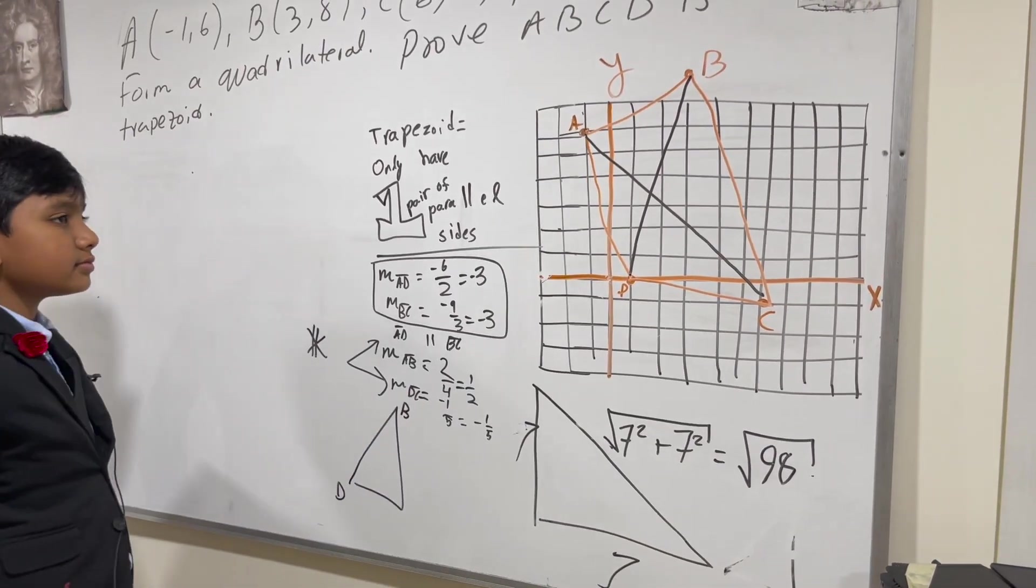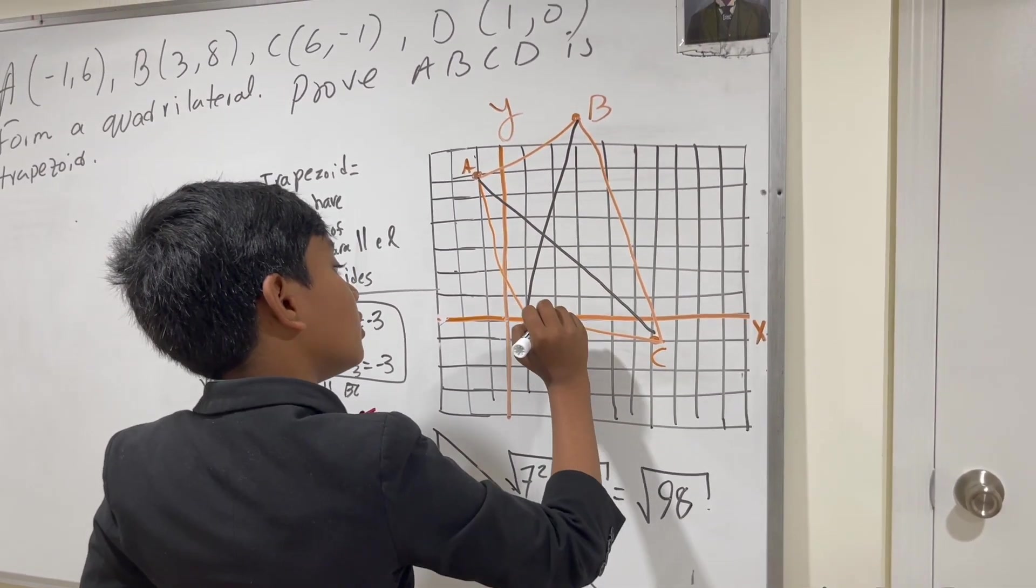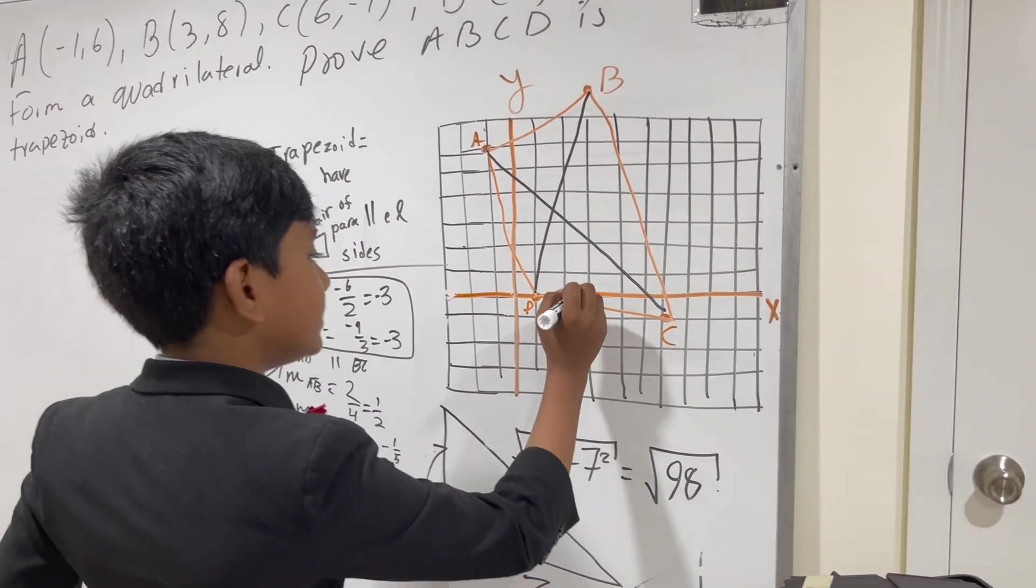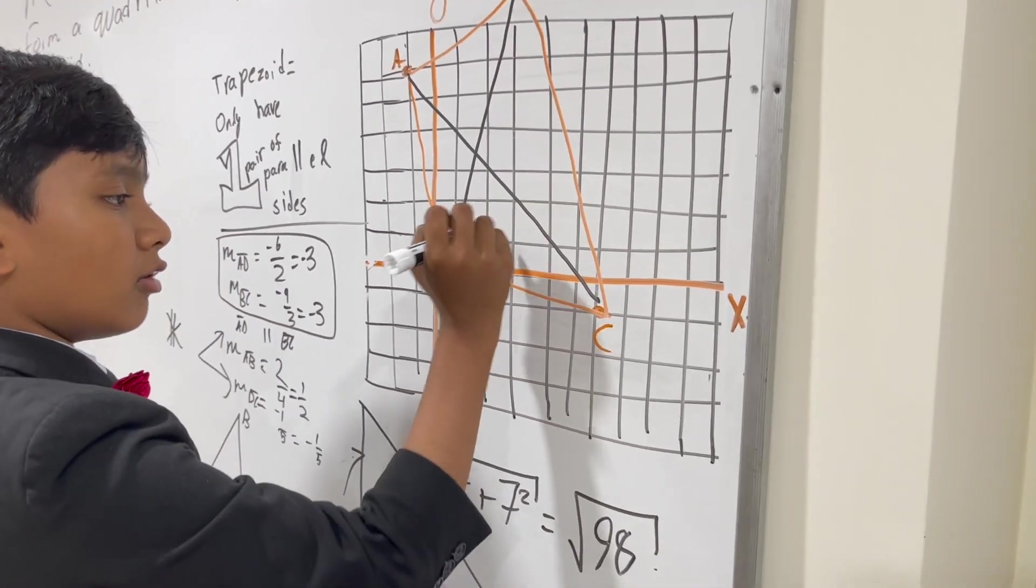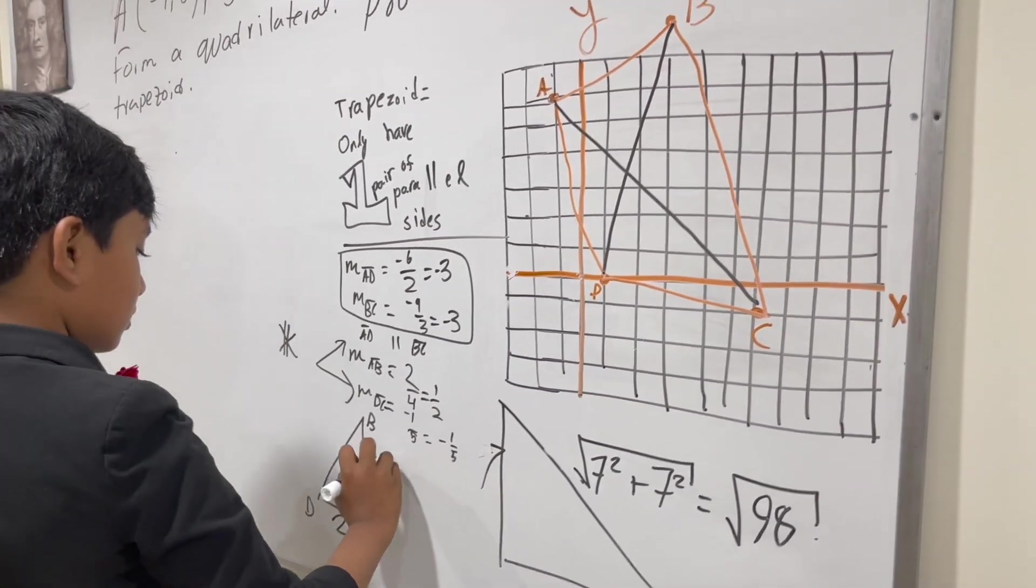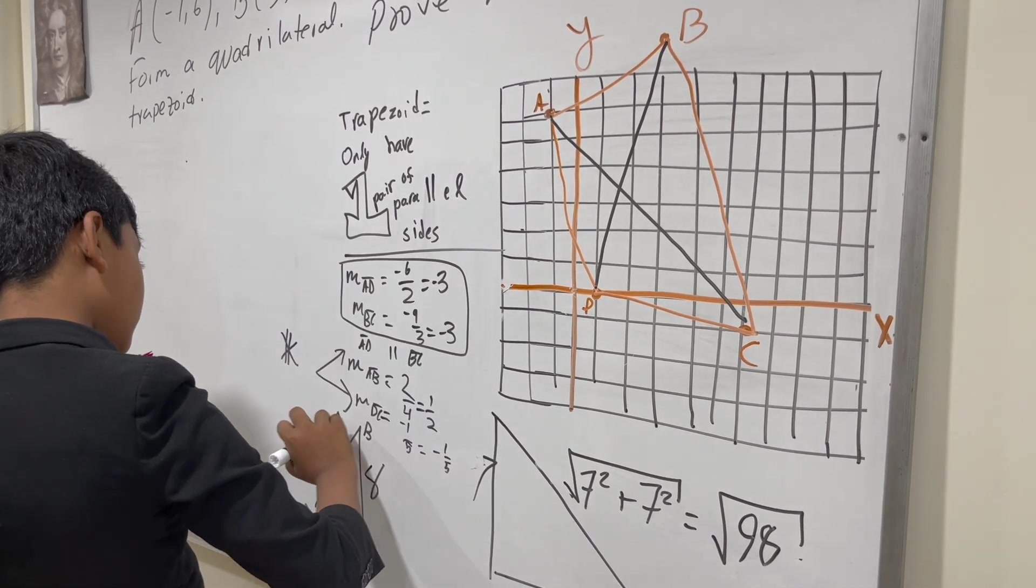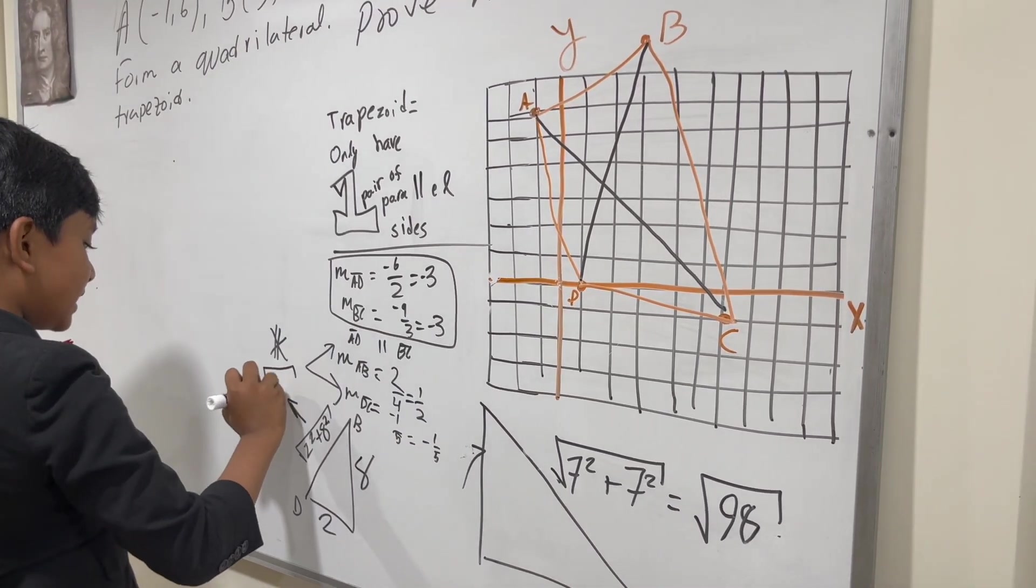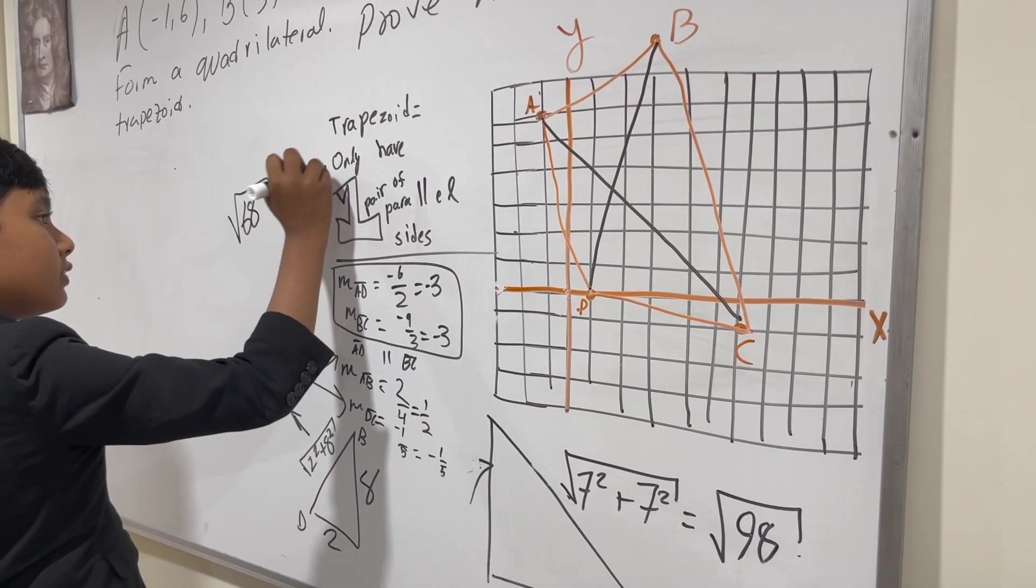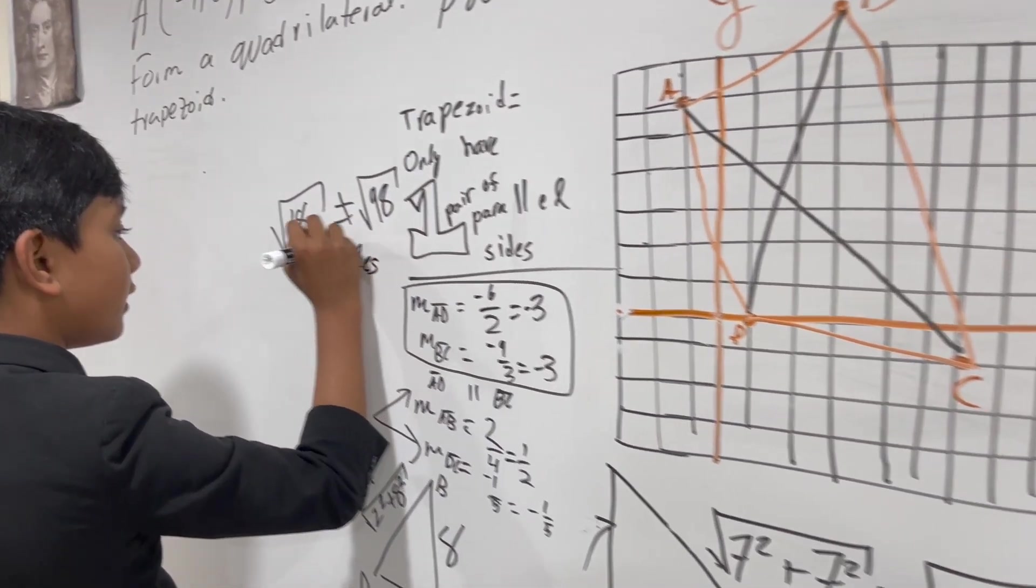So DB, what is the run? Well, the run is 1, 2. And the rise is, well, 1, 0, 1, 2, 3, 4, 5, 6, 7, 8. So you get 2 squared plus 8 squared, which becomes the square root of 68. So since these two are not equivalent, that means this is not an isosceles.